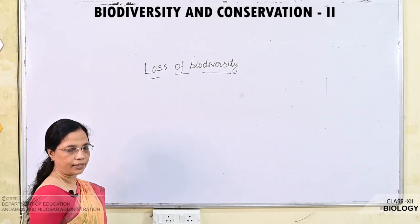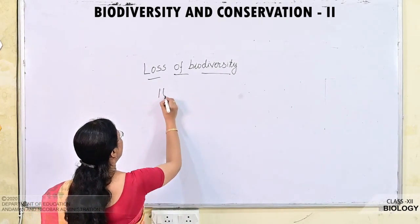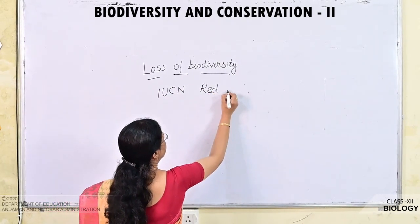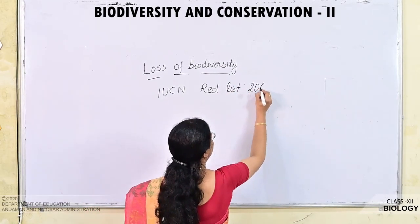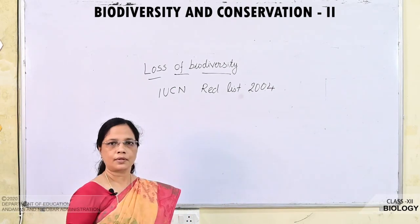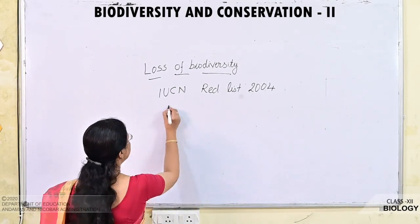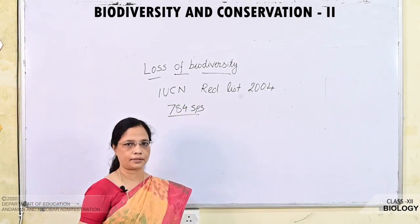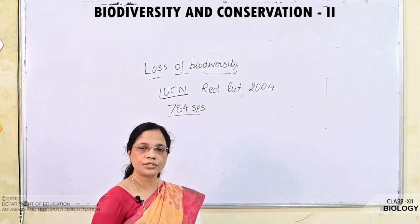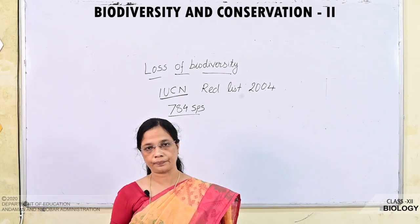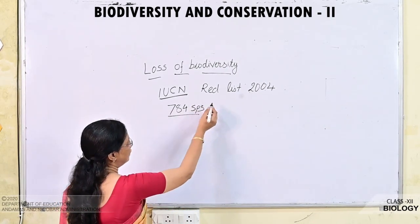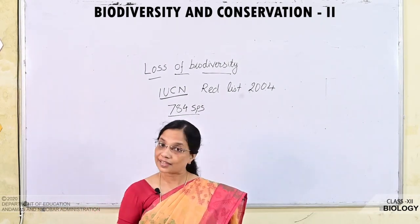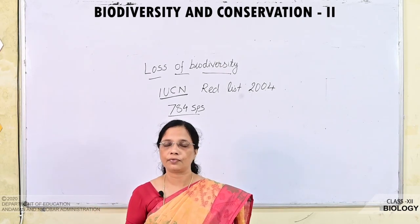Next we will see the losses of biodiversity. The IUCN Red List 2004 documents approximately 784 species that have gone extinct from this earth in the past 500 years, including invertebrates, vertebrates, and plants. IUCN stands for International Union for Conservation of Nature.